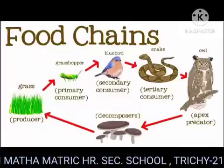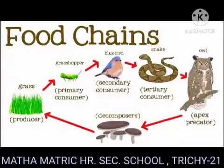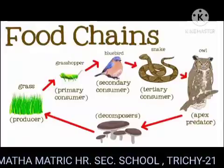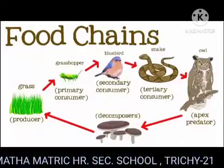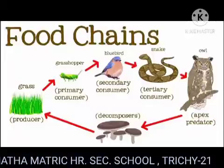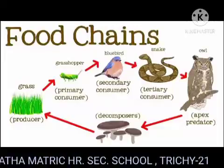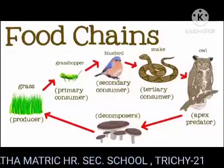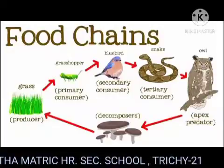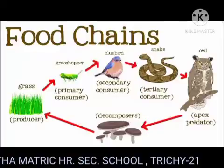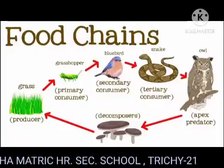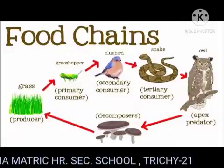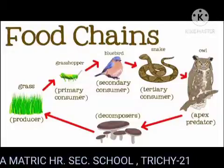In a forest, deer eats grass and in turn tiger eats deer. In any ecosystem, there is a chain-like relationship between the organisms that live there. This sequence of who eats whom in an ecosystem is called a food chain.